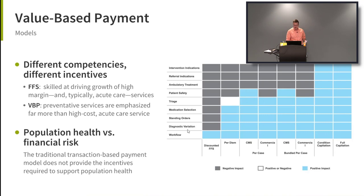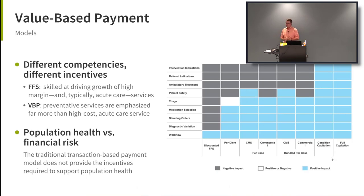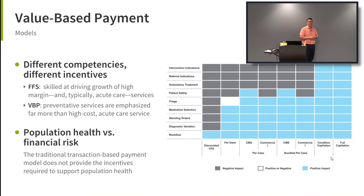Here's a chart on a similar scale — discounted fee-for-service, bundling, and capitation. The gray areas represent: if you invest money in this, it will hurt you financially and you'll probably go out of business. The blue areas represent: if you invest money in this, it will actually earn you more money. So with discounted fee-for-service, it doesn't make sense to invest in patient safety — not because you're a bad company, just because of the incentive structure.